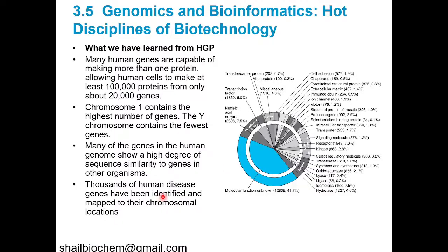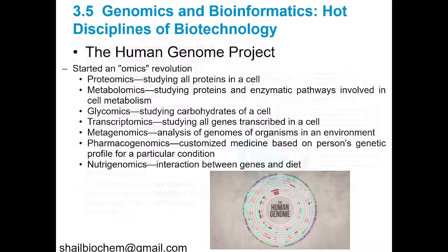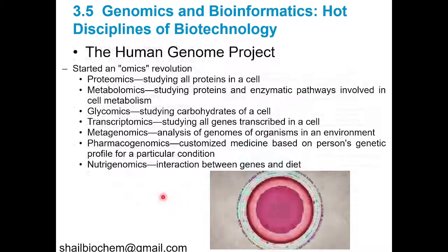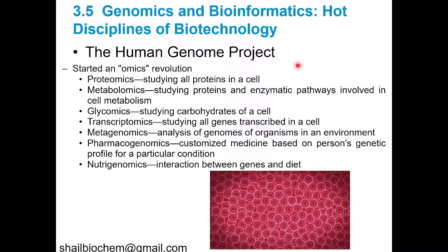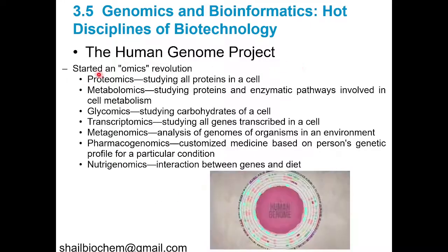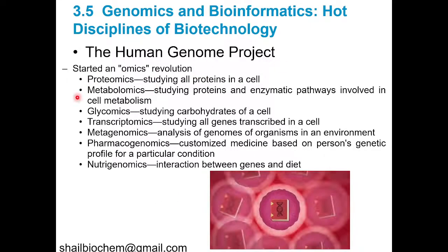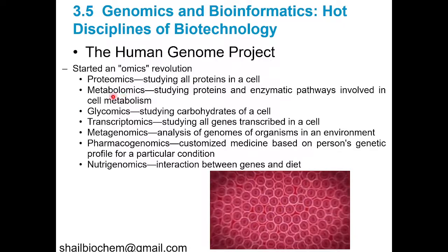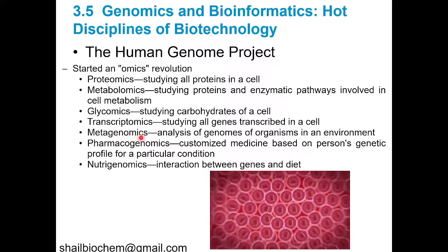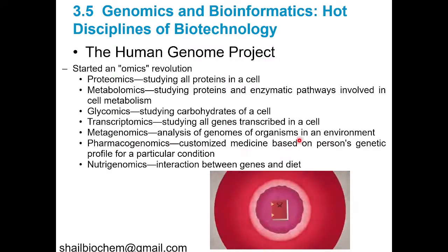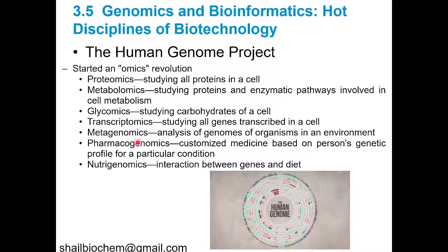Thousands of human disease genes have been identified and mapped to their chromosomal locations. The omics fields have evolved — including proteomics, metabolomics, glycomics, transcriptomics, and metagenomics — which is the analysis of the genome of organisms in their environment.